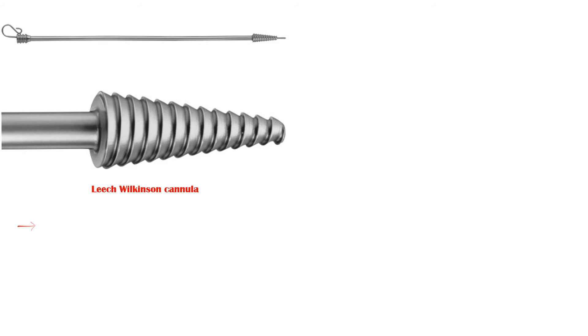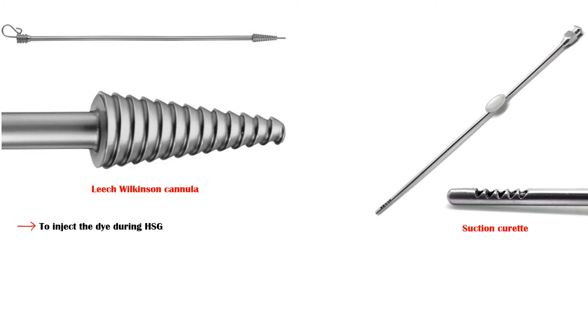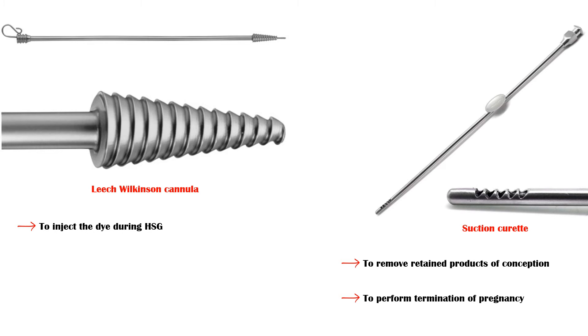Leach-Wilkinson cannula is used during hysterosalpingogram to inject the dye. Suction curette is used to remove retained products of conception after miscarriage and to perform termination of pregnancy.